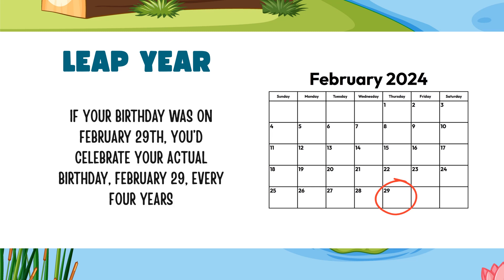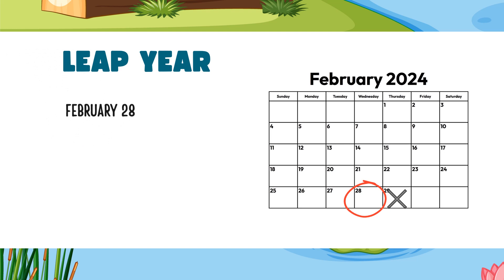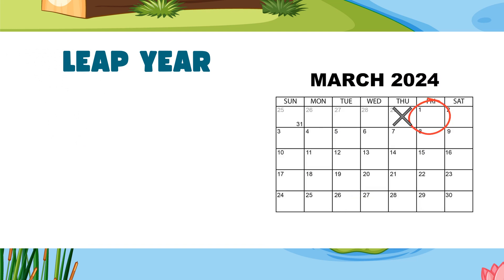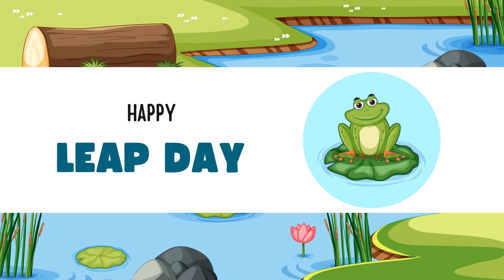What if your birthday was on February 29th? You'd actually only celebrate your birthday on February 29th every four years. For the other years, you would have to settle for celebrating on February 28th or March 1st. So, happy Leap Day, everybody!